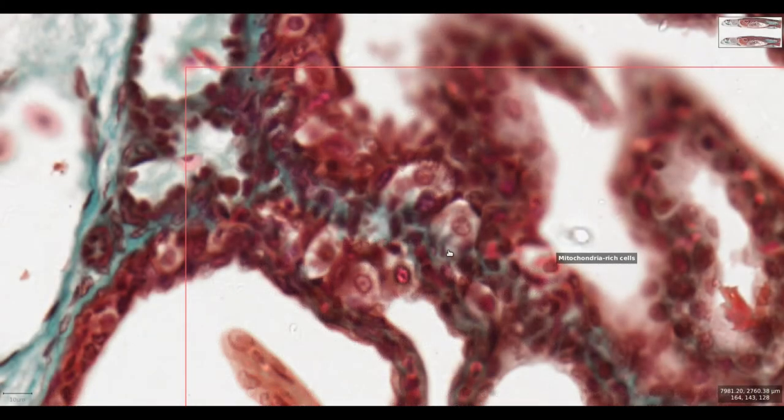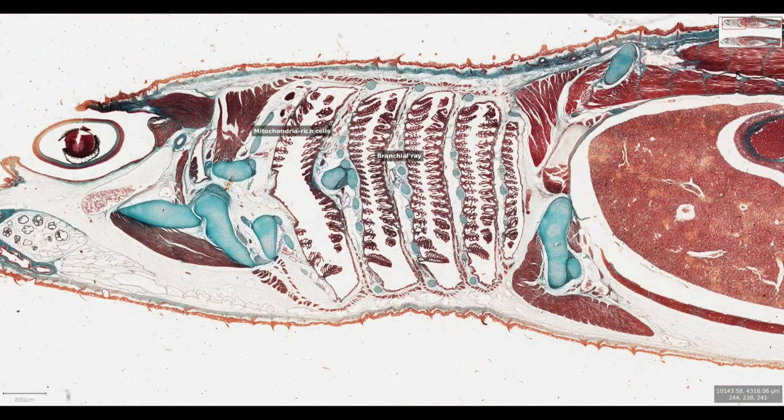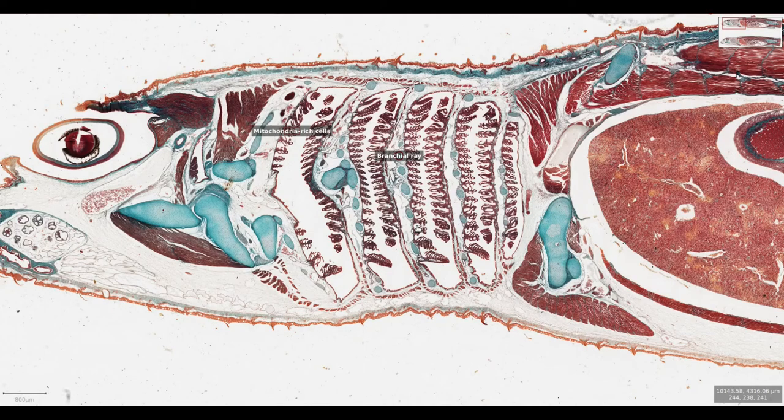A couple of other cell types are present but difficult to identify in these sections. There will be goblet cells which produce mucin to cover the gills with a protective layer. Additionally, there'll be neuroepithelial cells which sense oxygen levels and can regulate blood flow through the gills. Now that we've gone over the anatomy from macroscopic down to the individual cells, it's worth mentioning how water and blood flow through the gills.